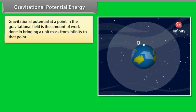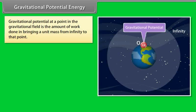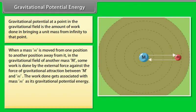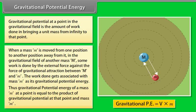Gravitational potential energy. Gravitational potential at a point in the gravitational field is the amount of work done in bringing a unit mass from infinity to that point. When a mass m is moved from one position to another position away from it in the gravitational field of another mass m, some work is done by the external force against the force of gravitational attraction between m and m. The work done gets associated with mass m as its gravitational potential energy. Thus, gravitational potential energy of a mass m at a point is equal to the product of gravitational potential at that point and mass m.